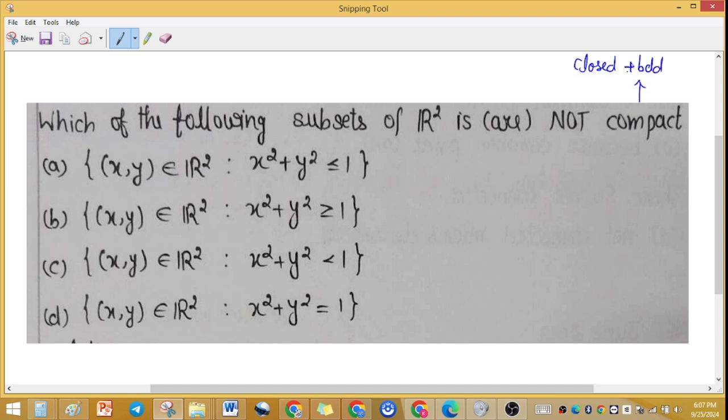In option A, x² + y² ≤ 1 represents a disk with both interior points and boundary points, which is closed and bounded. So option A is compact, but we are looking for not compact.